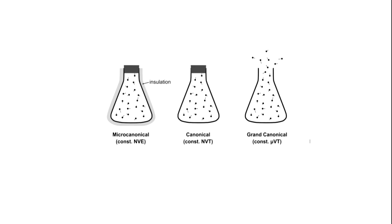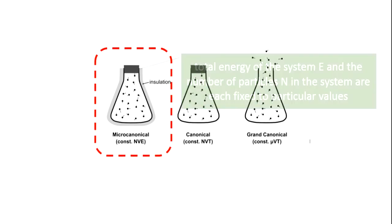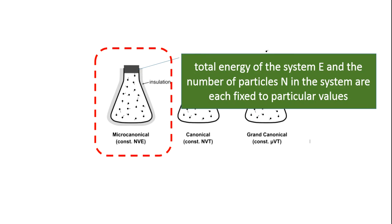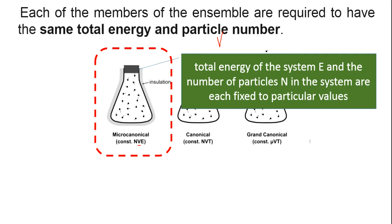In the micro canonical ensemble, the total energy of the system and the number of particles are each fixed at particular values — that is, total energy E and number of particles N are kept constant. Along with that, the volume is also kept constant. So the constants are N, V, and E — which is why it is called the NVE ensemble. Each member of the ensemble is required to have the same total energy and the same number of particles.